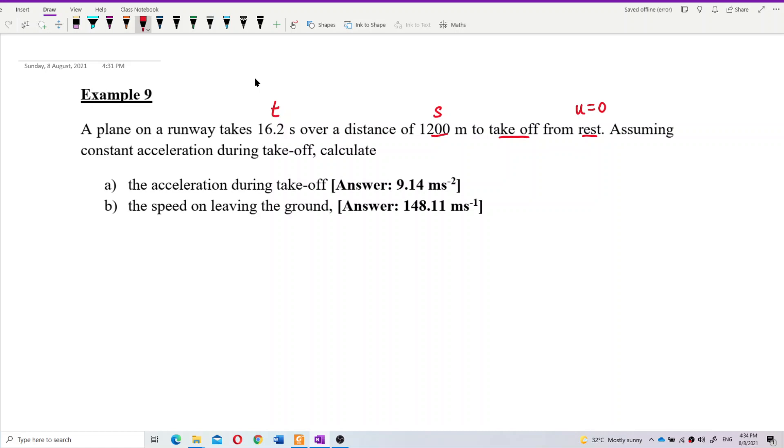To take off, here we have the final velocity we need to find. So assuming constant acceleration during take-off, all this while the acceleration is constant. We can use the kinematic formula during take-off. Calculate the acceleration during take-off.